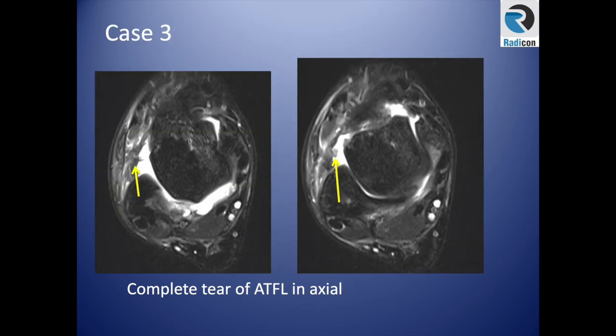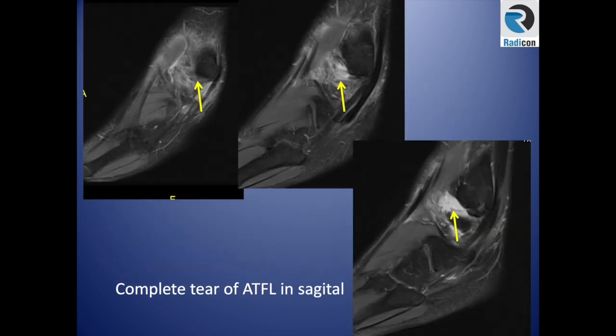Case three: again at the level of the coma shape, there is extensive fluid in the gutter with complete absence of any ligament or tissue, confirming a complete tear of the anterior talofibular ligament. This is also visible in other imaging planes.